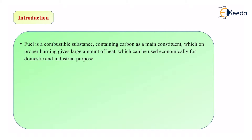Another example is diesel, and CNG — compressed natural gas. Petrol, diesel, and CNG all contain carbon and hydrogen as main constituents, which is nothing but hydrocarbon. These hydrocarbons, on proper burning, give us a large amount of heat. Proper burning means a good amount of oxygen should be provided, because oxygen actually helps in the combustion reaction. The reaction which produces a lot of heat and light is known as a combustion reaction — in short, a reaction which leads to fire.